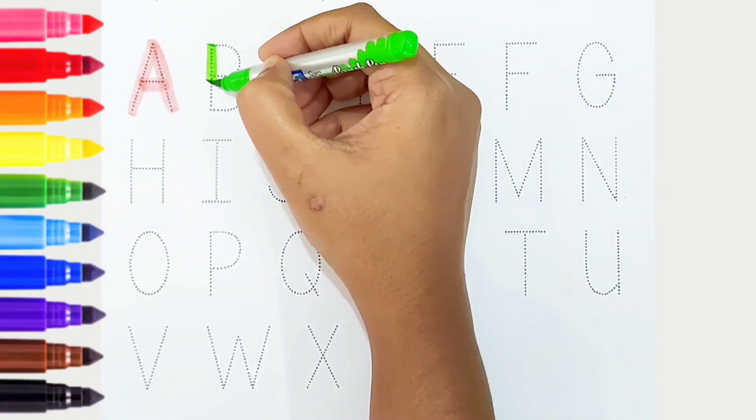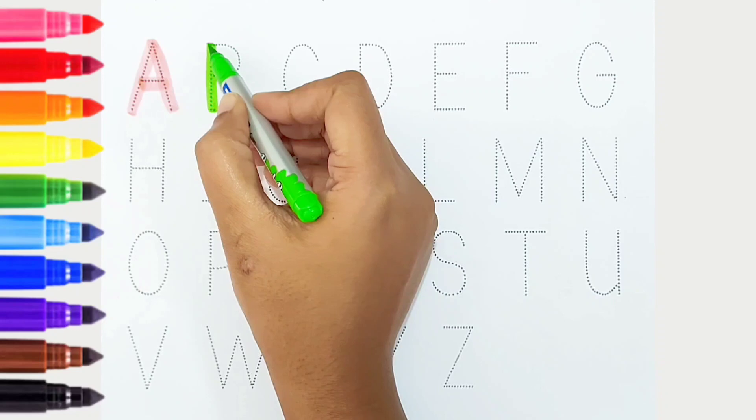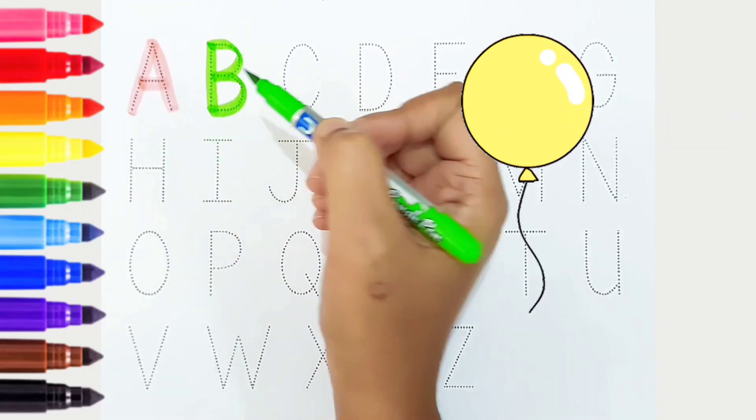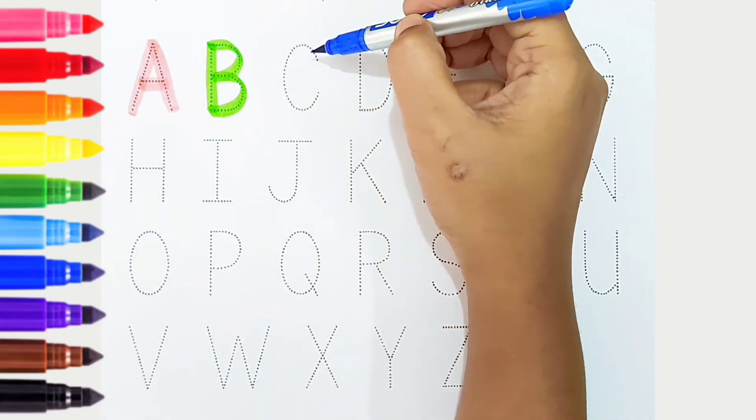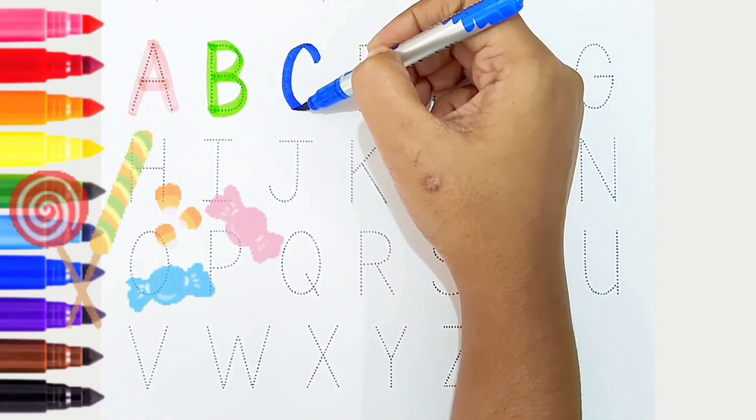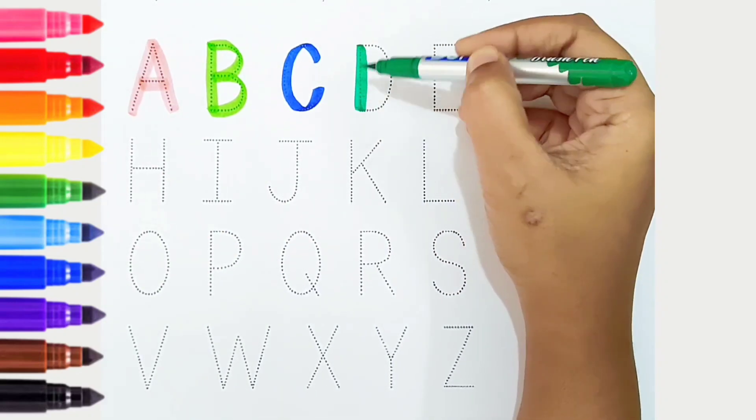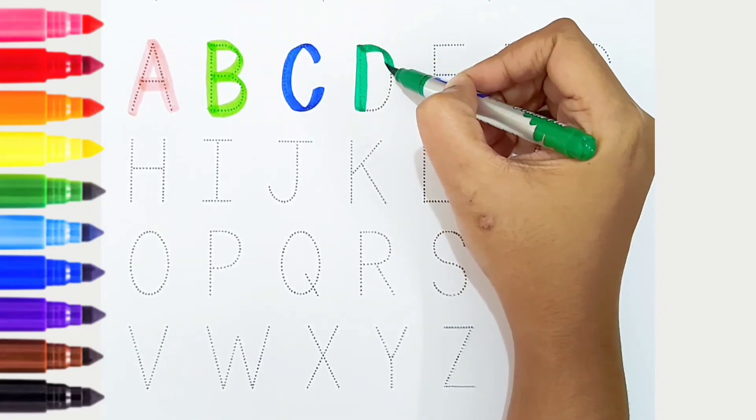B, light green color, is for balloon. C, dark blue color, is for candy. D, dark green color, is for dog.